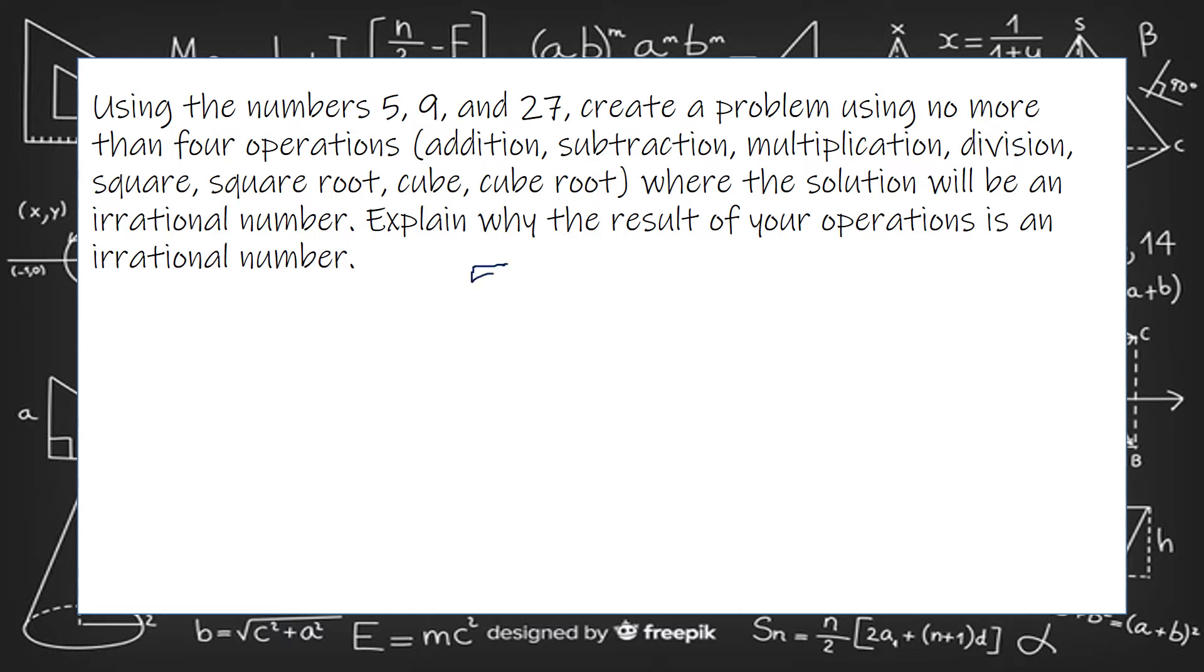So I'm going to write my three numbers. Okay, and let's just, I can just throw some operations in there, but 5 plus 9 minus 27 is still going to give me an integer of some sort, but I need to make it an irrational number. And the way I make something an irrational number is take the square root of something that's not a perfect square.